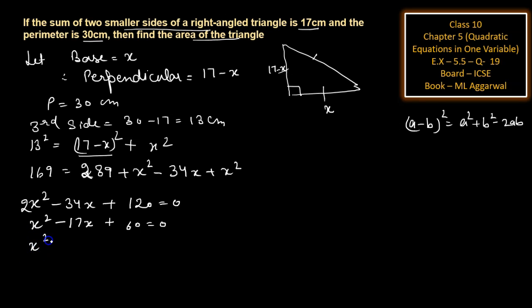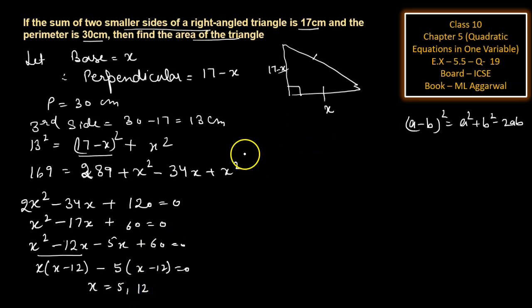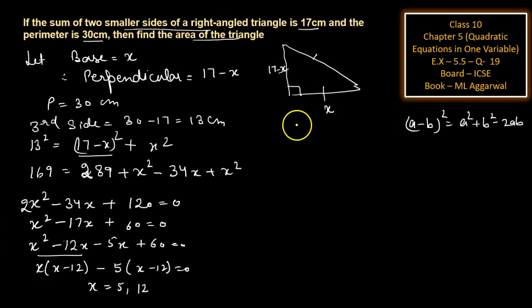Now using middle term splitting: x squared minus 17x plus 60 equals 0, which factors as minus 12x minus 5x plus 60. Taking common factors: x(x minus 12) minus 5(x minus 12) equals 0, so (x minus 12)(x minus 5) equals 0. Therefore x equals 5 or x equals 12. So one side is 5 and the other side is 17 minus 5, which is 12.